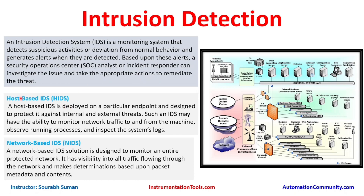There are two types of IDS: host-based IDS and network-based IDS. Host-based IDS is deployed on a particular endpoint and designed to protect it against internal and external threats. Such an IDS may have the ability to monitor network traffic to and from the machine, observe running processes, and inspect the system logs.